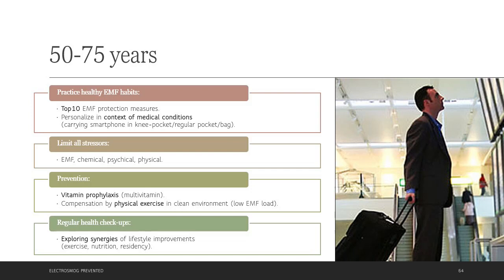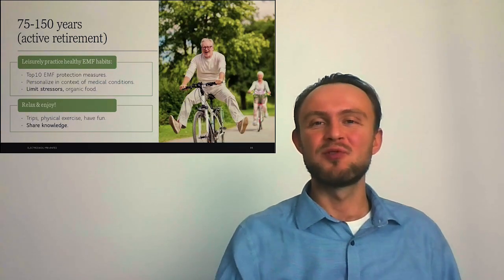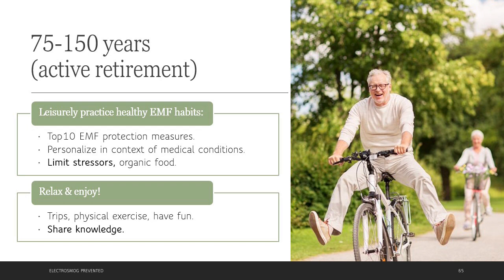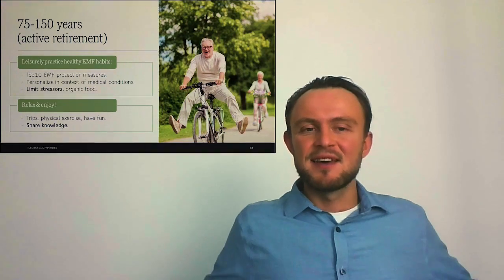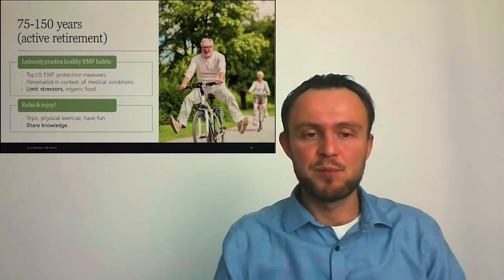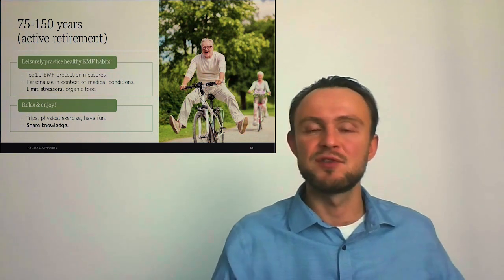We may perform regular health checkups and explore synergies of lifestyle improvements. If we eat healthy food or we start exercise, it will help us to reduce health effects of electromagnetic fields, but also improve our overall condition and can decrease symptoms of diseases. During active retirement, we might practice healthy EMF habits just leisurely. The top 10 protection measures are good baseline, which can be personalized in context of our medical conditions. We may limit stressors by, for example, eating more organic food. Very important is relaxing and enjoying life, going to trips, regularly exercising, having fun. As a very nice life purpose at this point of life is sharing knowledge with younger generations.